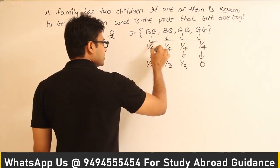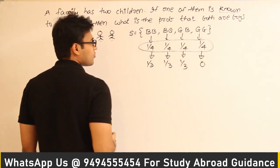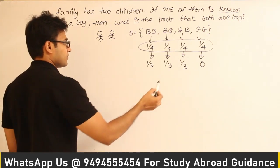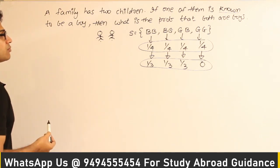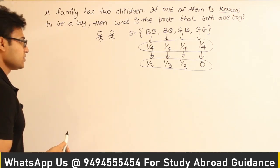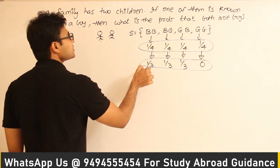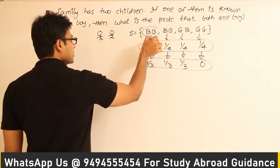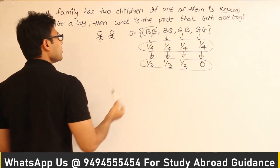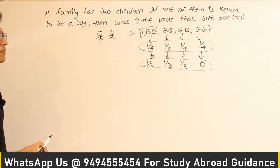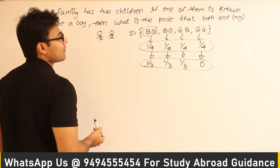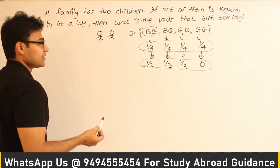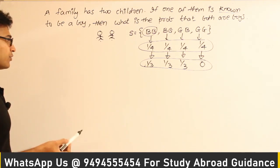After assigning the probabilities, just see that the sum of all probabilities of this sample space is 1. Now, they are asking: what is the probability that both are boys? After changing the probabilities, the probability of event BB is 1/3. You can directly do it like that, or by using the conditional probability formula. Without using the formula you might get the answer, but later it is going to play a very important role.